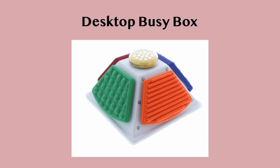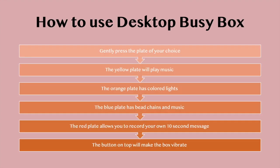The next toy that we have is the Desktop Busy Box. It costs $159.99 and you can purchase it at enablingdevices.com. To use the Desktop Busy Box, it is very simple. You just press the plate of your choice. The yellow plate will play music, the orange plate has colored lights, the blue plate has bead chains and music, and the red plate allows you to record your own 10-second message and play it back. The button on top will make the box vibrate, so it's a really good sensory tool.